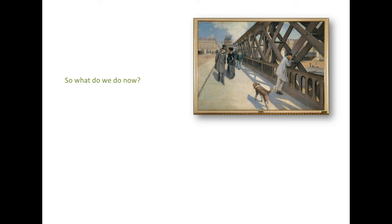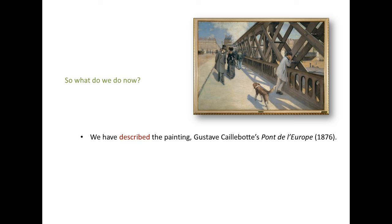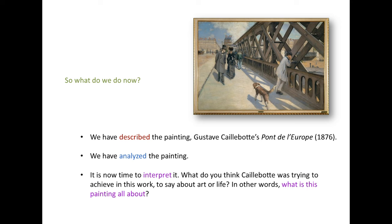So what do we do now? We have described the painting, Gustave Caillebotte's Pont de l'Europe, 1876. We have analyzed the painting. It is now time to interpret it. What do you think Caillebotte was trying to achieve in this work, to say about art or life? In other words, what is this painting all about? Be patient. We will discuss interpretation in the next video.